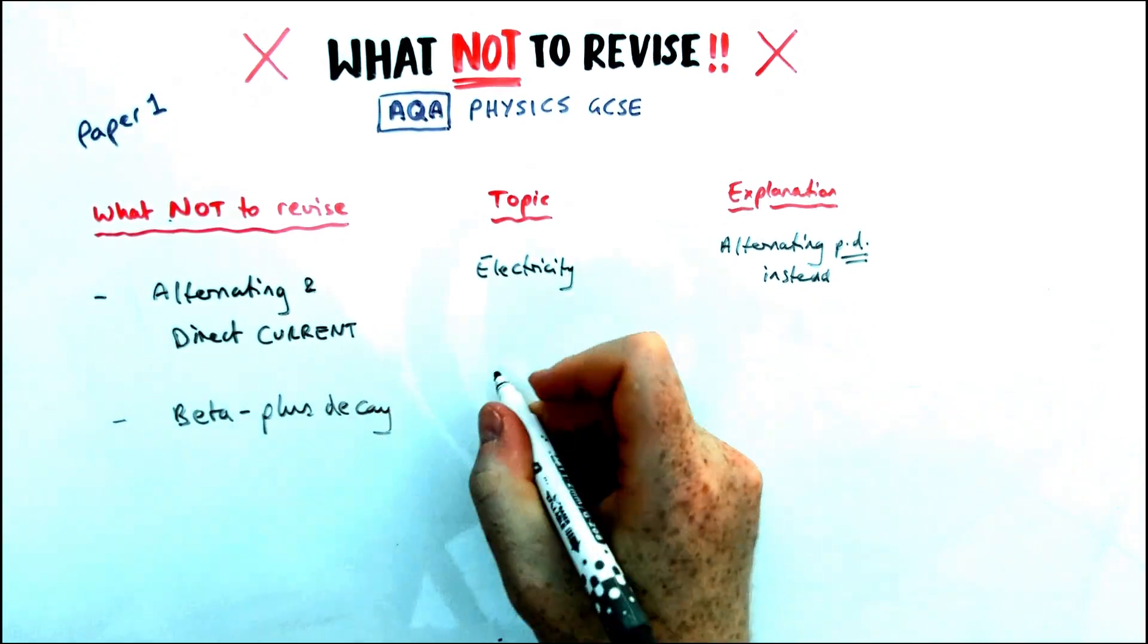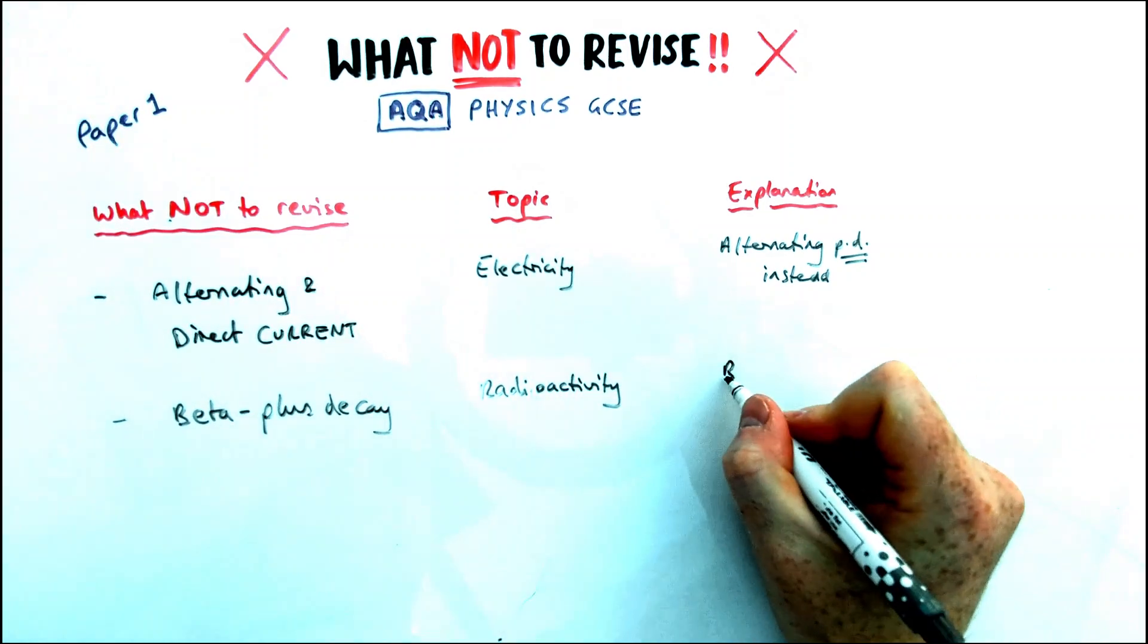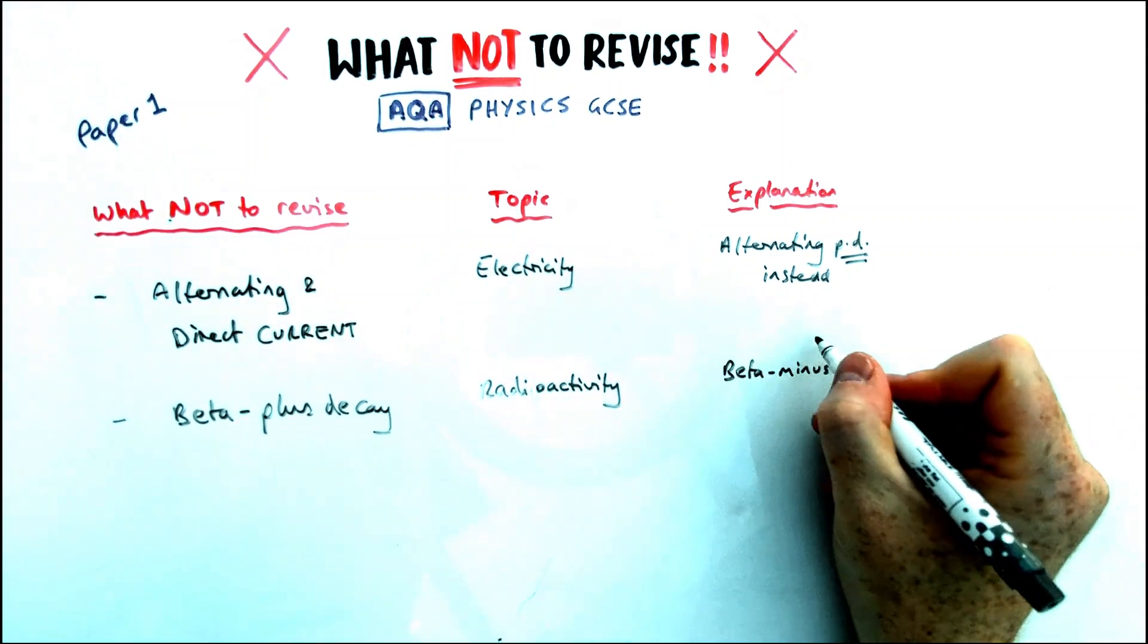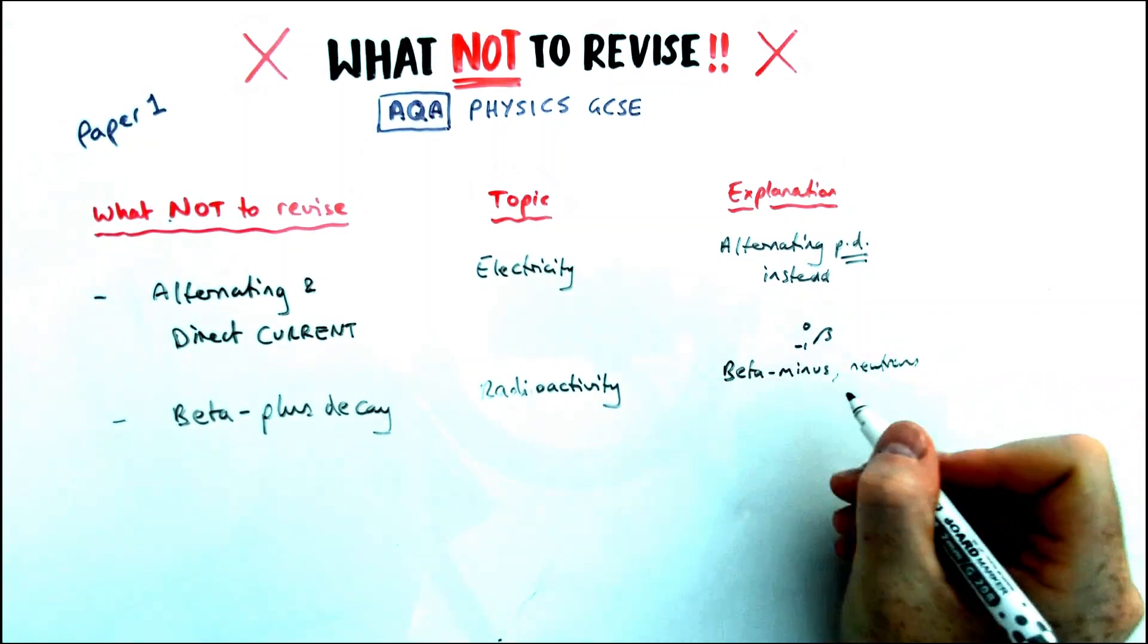There's something called beta plus decay, which you might see in other exam boards, which isn't required for AQA. It's in radioactivity. We just deal with beta minus, alpha and gamma, and also neutron radiation, so emission of neutrons.